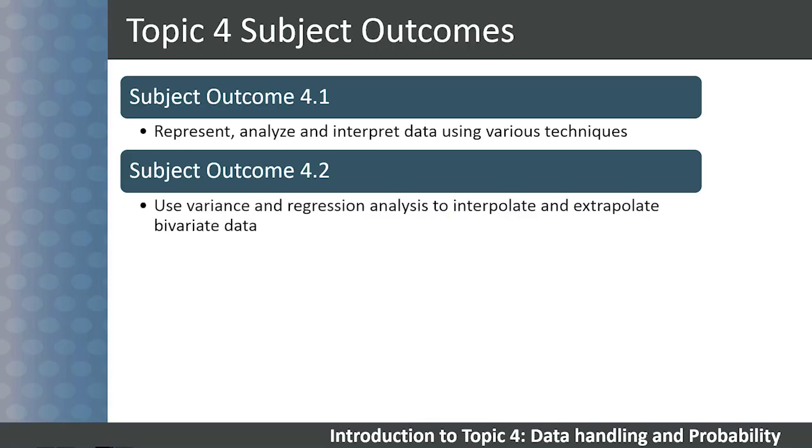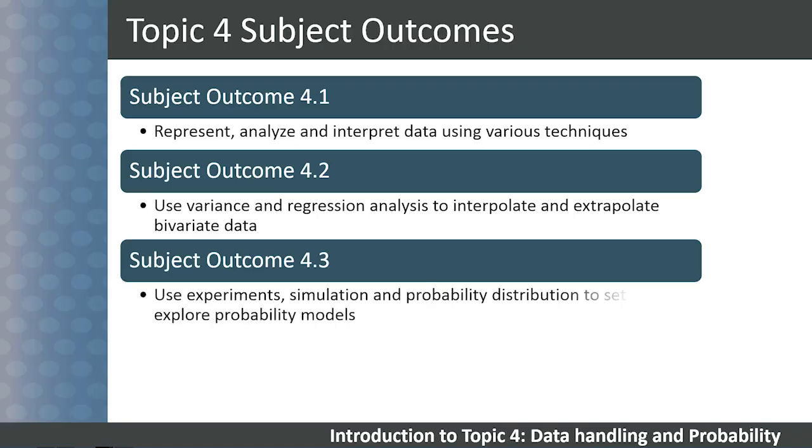Subject Outcome 4.2: Use variance and regression analysis to interpolate and extrapolate bivariate data. Subject Outcome 4.3: Use experiments, simulation and probability distribution to set and explore probability models.